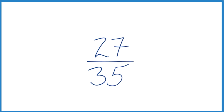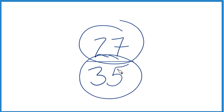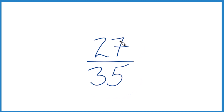Let's simplify 27 over 35. We're looking at the fraction 27 thirty-fifths. What we want to do is find another factor that's equivalent — equal, has the same value as 27 divided by 35 — just that we have it in lowest terms.